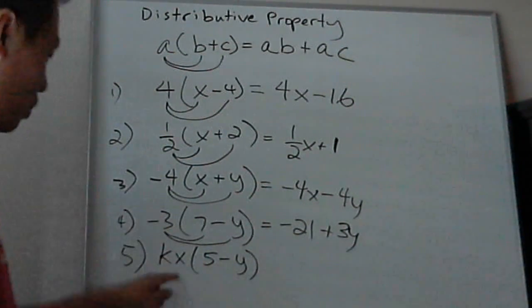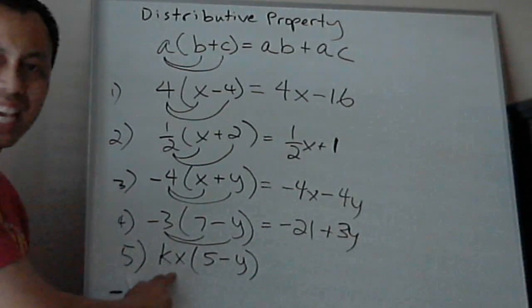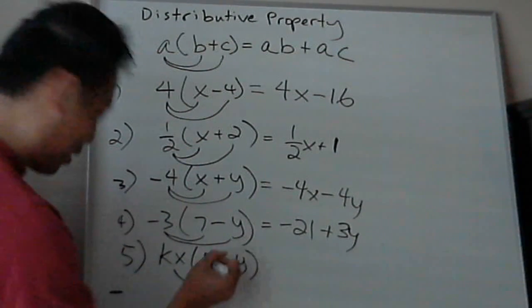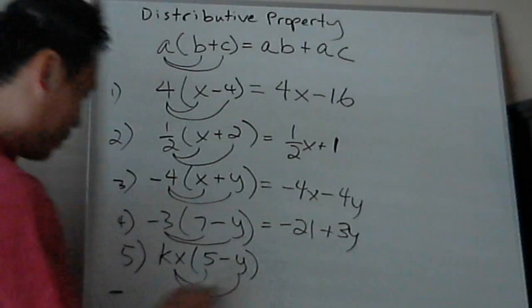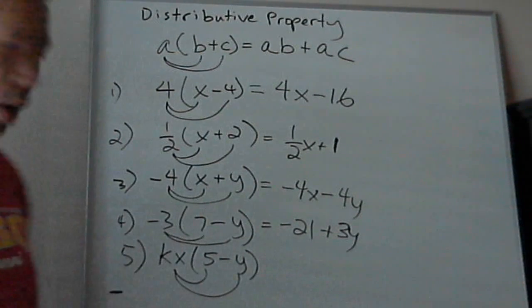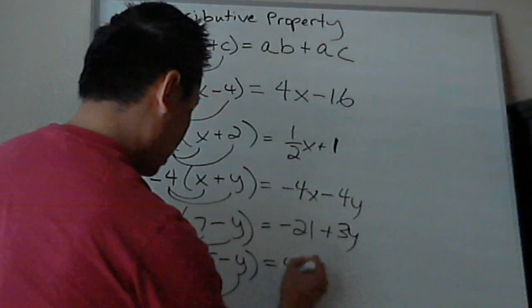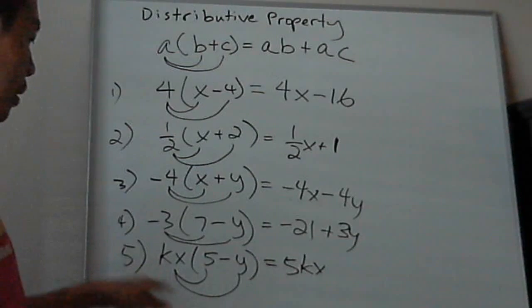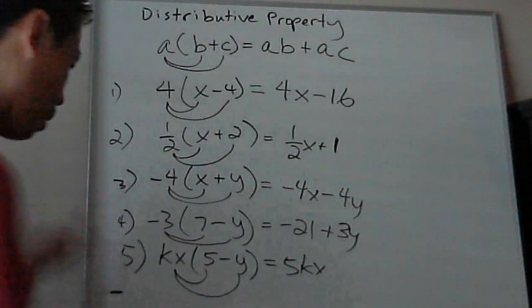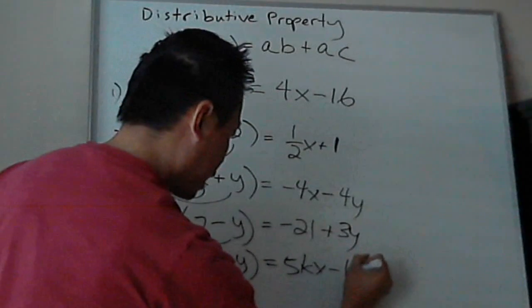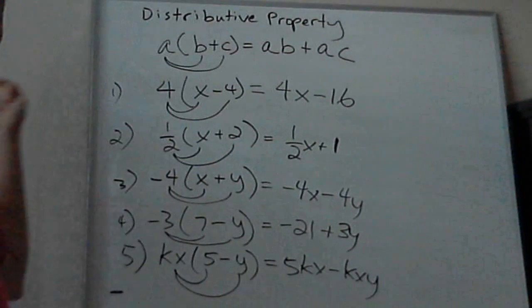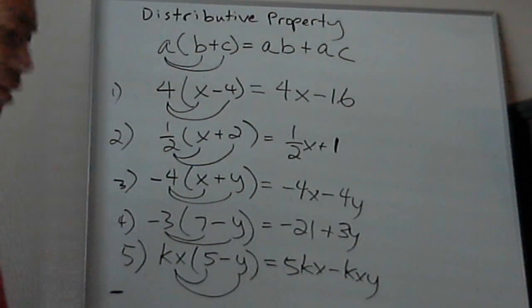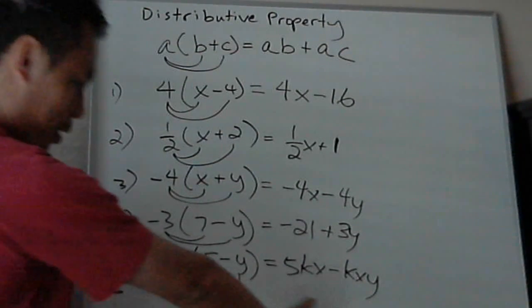Now we'll look at more variables, like what happens if it's kx - two variables, not just one. Same thing, you multiply it. The rules don't change. What's kx times 5? That's 5kx. And kx times negative y is negative kxy. That's it. It looks complicated with all these letters, but you just distribute it.